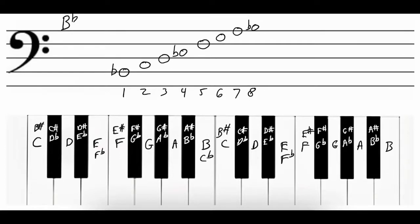The interval between the first and the second note, B-flat and C, is a whole step because we skipped over B. The interval between the second and the third note, C and D, is a whole step, having skipped over that C-sharp or D-flat. The interval between the third and the fourth note, D and E-flat, is a half step because they're right next to each other. The interval between the fourth and fifth note, E-flat and F, is a whole step — we skipped over E.